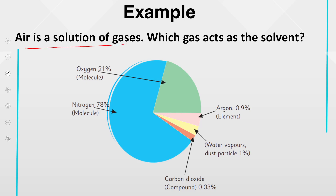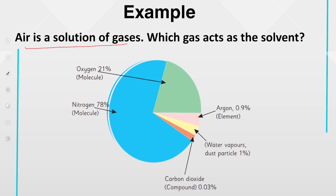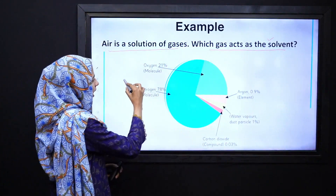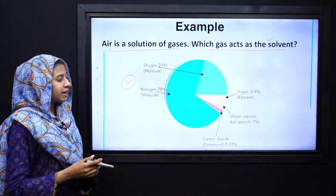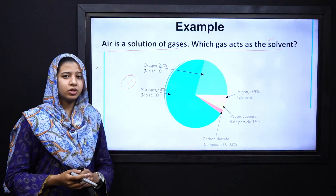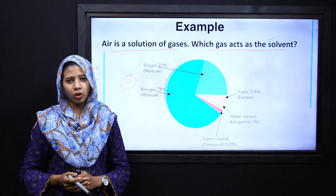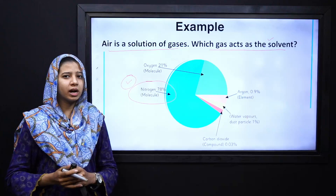In all gases, we will have a solvent. You have been given a graph — you can see the concentrations of the gases. Tell me which gas acts as a solvent in this solution. Very good. We have seen that nitrogen acts as a solvent because it is present in the larger amount.